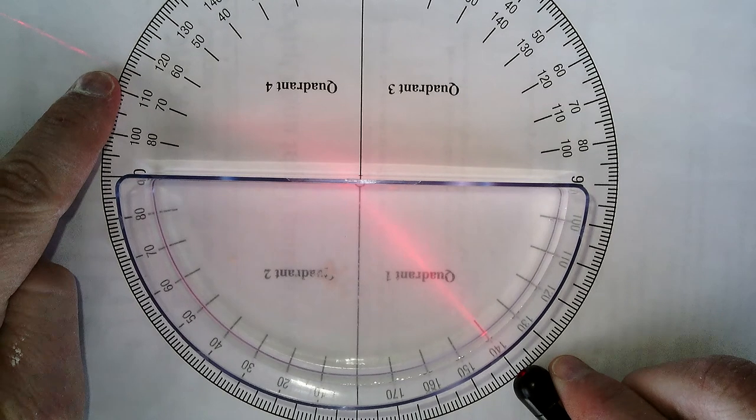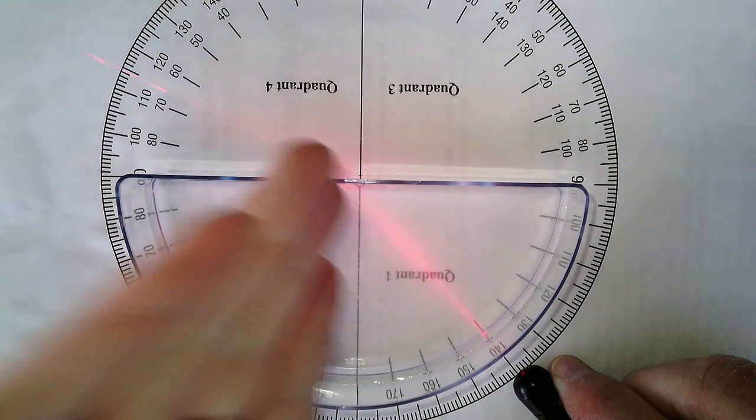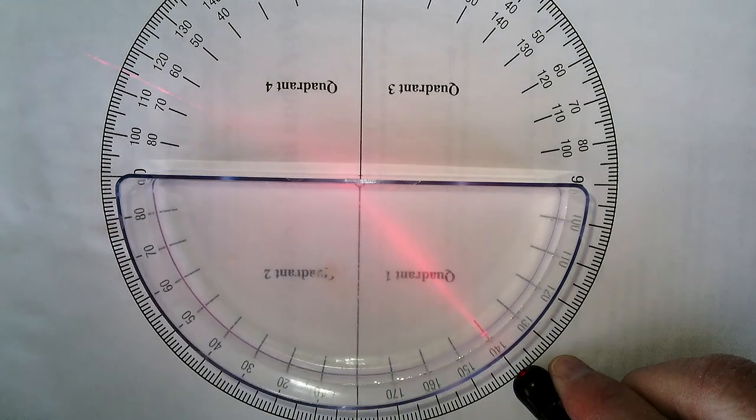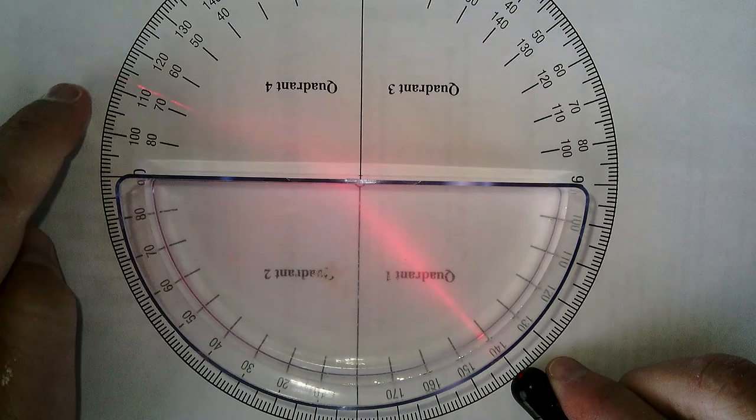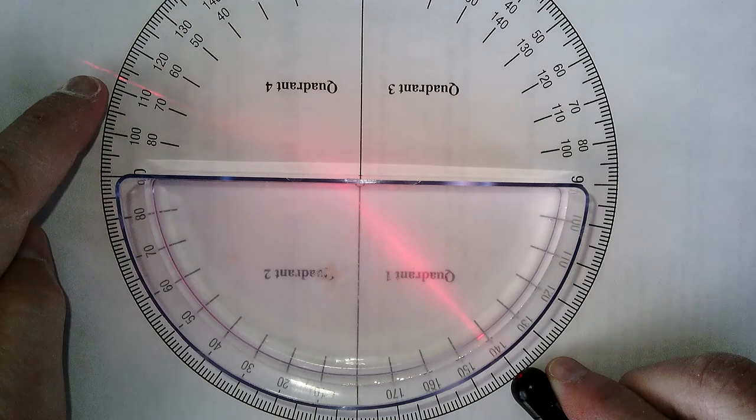So as I go from a more dense media to a less dense media, it's actually going to turn away from the normal. So if I come in here at 45 degrees, I'm coming out at 68 degrees.